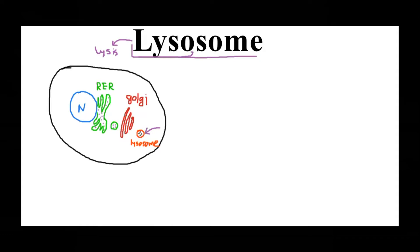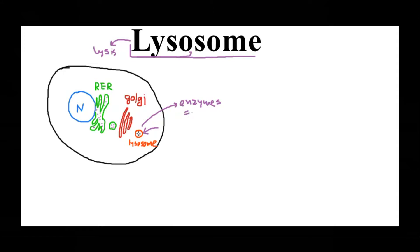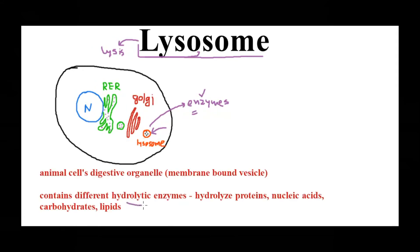They are the digestive organelles, and if they are digestive organelles, what is needed for digestion? They should have specific hydrolytic enzymes, right? Then only it can carry out the lytic function. So it contains different types of hydrolytic enzymes which can hydrolyze proteins, nucleic acids, carbohydrates, etc. And from where do these enzymes come from?